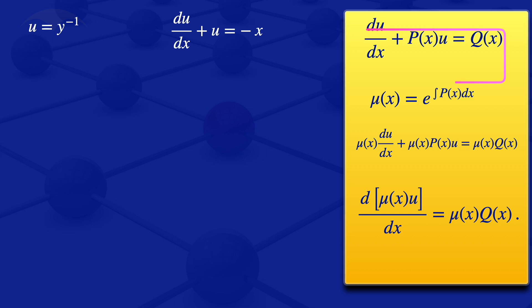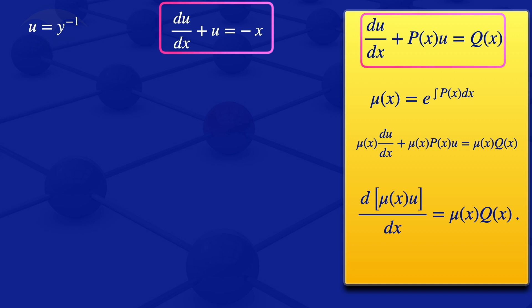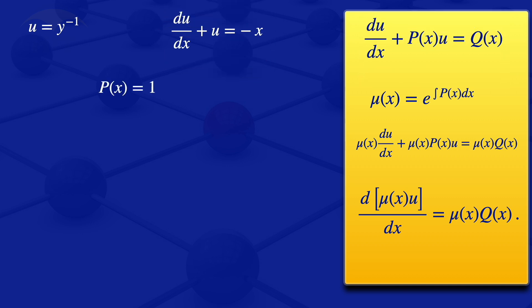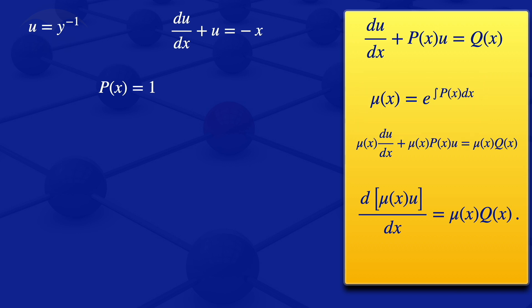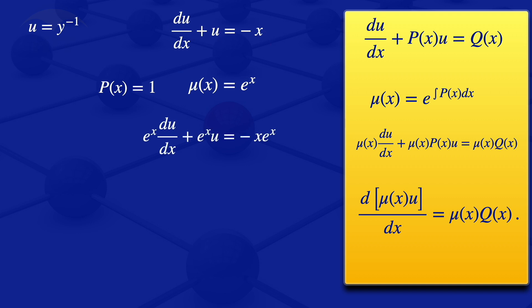Comparing our equation with the standard form, we see that P of X is equals to 1. So our integrating factor is the exponent of the integral of 1 with respect to X, which gives us mu equals exponent of X. Multiplying the equation by the integrating factor gives us: exponent of X multiplied by the derivative of U with respect to X, plus exponent of X multiplied by U, is equals to minus X multiplied by exponent of X.